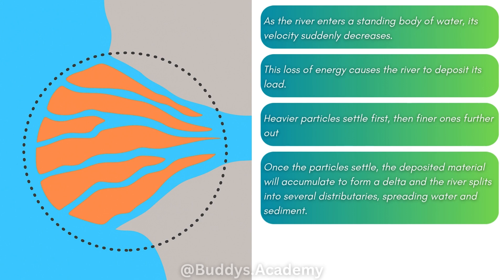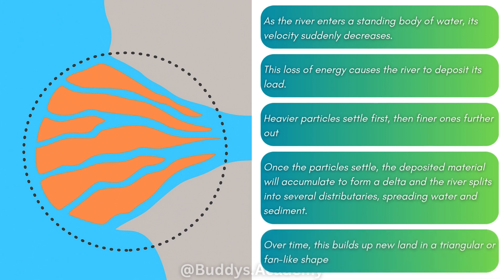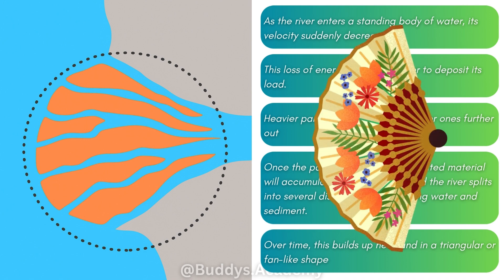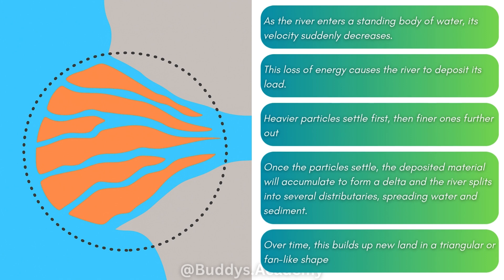The river is then going to split into several distributaries, spreading water and sediment. Over time, this builds up new land in a triangular or fan shape — and when we say fan shape, we're not talking about the fan you find in your ceiling; we're talking about a hand fan. And this is going to form a delta.